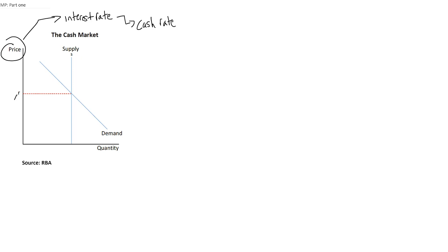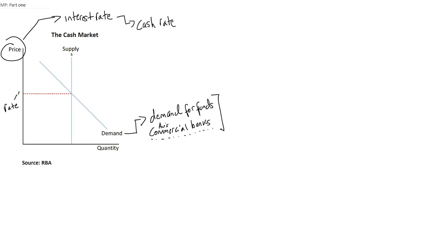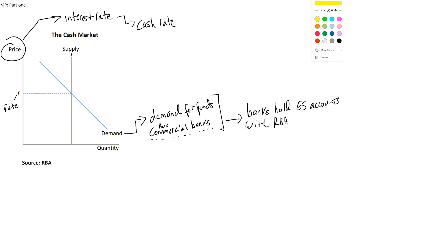Here R stands for rate rather than dollars as the price. The demand for funds in this market comes from commercial banks — the banks out there lending to the public and dealing with transactions. What's important to note is that these commercial banks hold what are known as ES accounts with the RBA. It's similar to how you have an account with your bank — all of the banks have an account with the RBA as well, known as ES accounts.